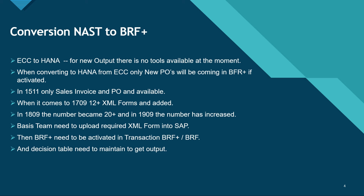Now let's talk about the conversion of NAST to BRF+. From ECC to HANA, if you're using new output, there are no tools available at the moment. When converting to HANA from ECC, only new purchase orders will come into BRF+ if activated. From 1511 only sales and PO are available. In 1709 there are 12-plus XML forms added, from 1809 that increased to 20-plus, and in 1909 the number increased further. To upload this XML format the basis team needs to pitch in, then BRF+ is activated via transaction BRF+ and a decision table must be maintained to get the output.